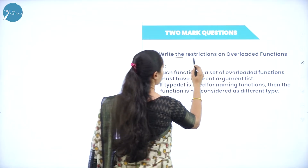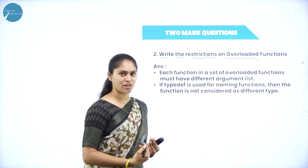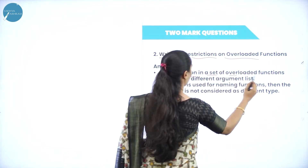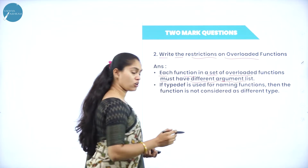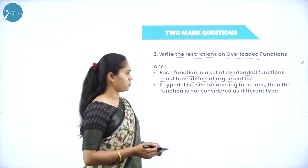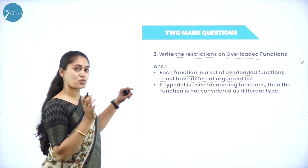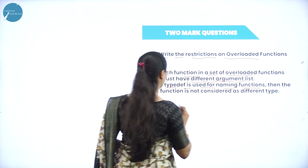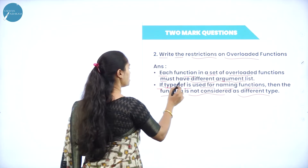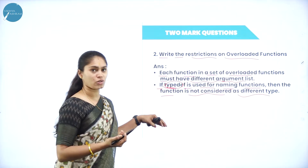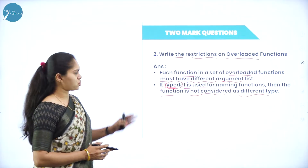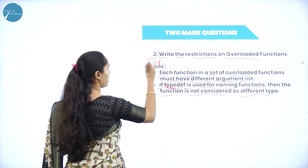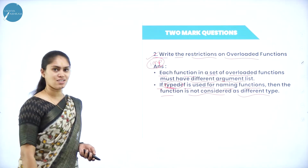Next question: write the restrictions on overloaded functions. If you want an overloaded function in your program, what conditions must be satisfied? Each function in a set of overloaded functions must have a different argument list and must differ in the data type of arguments. Also, if typedef is used for naming a function, the function is not considered as a different type — we cannot give an alias name. These are the two important restrictions on overloaded functions, and this is a frequently asked question.